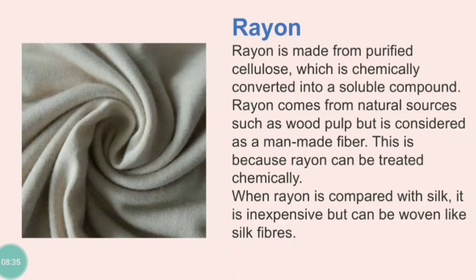Now we will study about rayon. You have studied that silk fibers are obtained from silkworms, discovered in China, and kept as a closely guarded secret for a long time — because it was so expensive and such a royal cloth that they were earning a lot from silk. But now modern scientists have created different synthetic fibers. The very first important one is rayon.